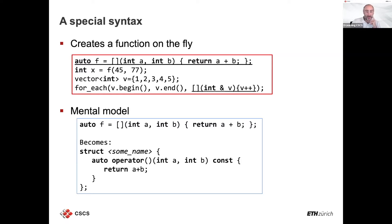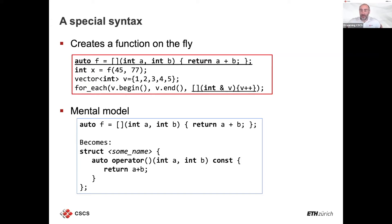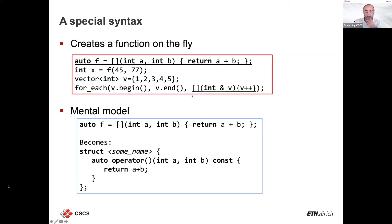Lambdas are extremely powerful tools. In a simple example, you have a vector and you want to iterate over it and increment every value. Before lambdas, you would have to define a function or function object somewhere outside your scope, which creates a decoupling between the code you read and what the code is doing — it's defined somewhere else. With lambdas, you can define the behavior directly in your code, making it more readable.